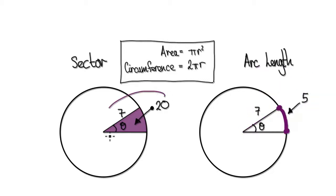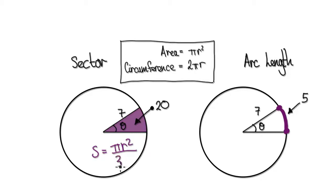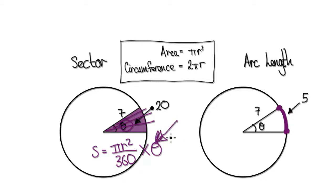Let's start with this first. In the previous video, we've seen that the area of the sector, let's call it S, equals πr² and then we would cut up into 360 equal pieces, and then we would times this many pieces — so this many pieces being theta. Theta represents the angle. Our job is to work out theta; in this video we've got to work backwards to find theta.